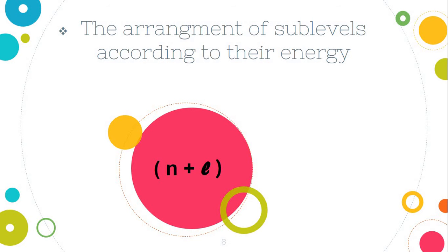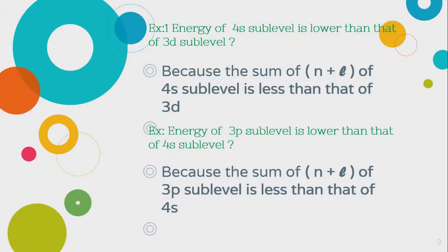The arrangement of the sublevels according to their energy by n plus ℓ. For example, energy of the 4s sublevel is lower than that of the 3d, unless the 4s is higher than the 3d, but it is lower in energy. Why? Because the sum of n plus ℓ of the 4s sublevel is less than that of the 3d. The 3p sublevel is lower than that of the 4s sublevel because the sum of the n plus ℓ of the 3p is less than that of the 4s.